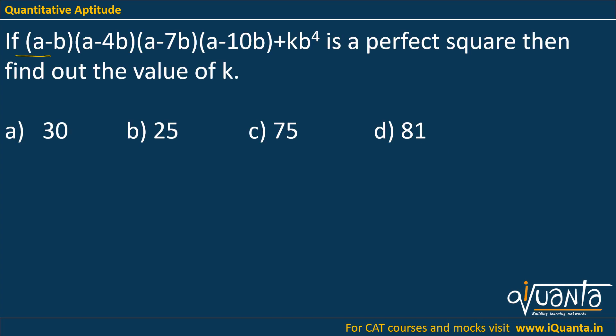The question is: if (a-b)(a-4b)(a-7b)(a-10b) + kb^4 is a perfect square, then find out the value of k.